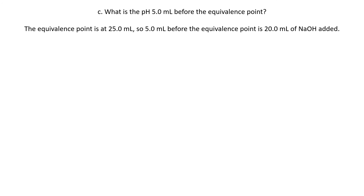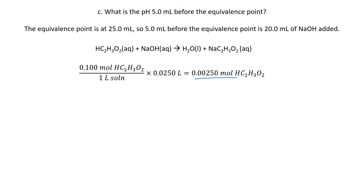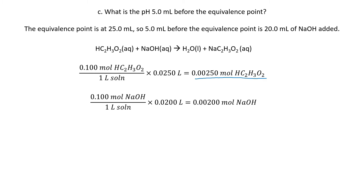Let's go on to part C. We want to know the pH five milliliters before the equivalence point. We already know the equivalence point happens at 25 milliliters, so five milliliters before means we have only added 20 milliliters of sodium hydroxide. My acetic acid is reacting with sodium hydroxide to form water and sodium acetate, so I need to do some stoichiometry. I'll set up a stoichiometry table to stay organized.